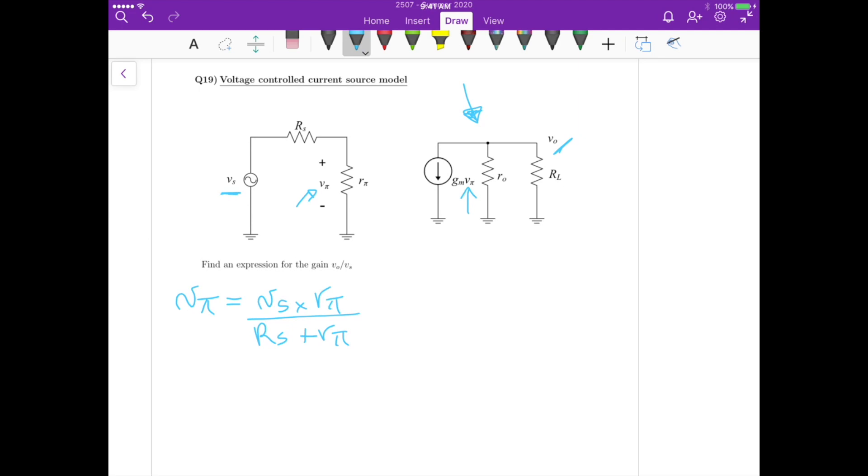Now for the second step, once we know Vpi, we can calculate Vout using this circuit. For that, we can use a current divider. The current here is flowing in this direction. Part of this current, GM Vpi, is flowing through R0 and RL. We know that Vout is this current I0, the current flowing through RL, times RL.